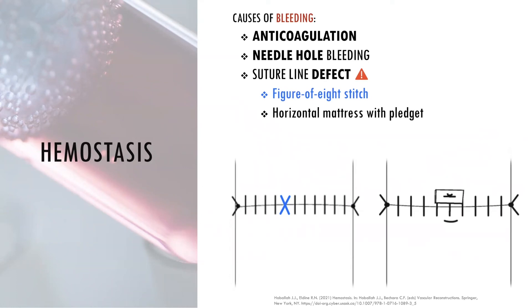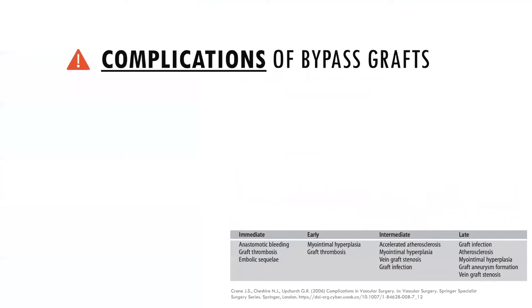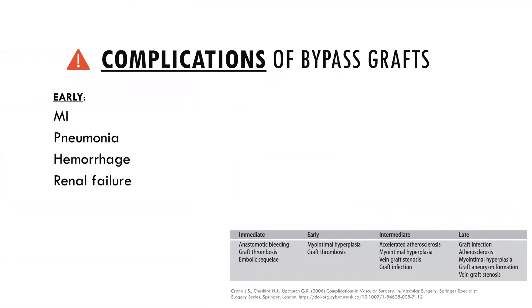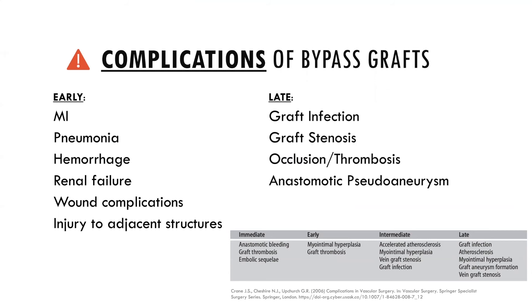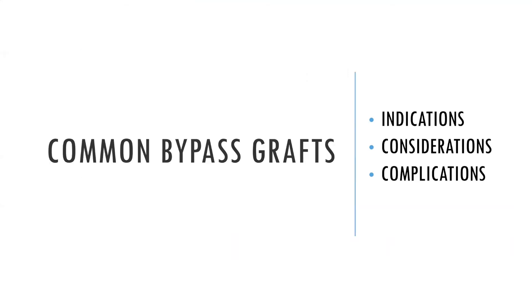Complications may occur in the perioperative and postoperative period. Early complications include cardiac complications such as MI, respiratory issues like pneumonia, hemorrhage, renal failure, wound complications, and injury to adjacent structures. Later complications include graft infection, graft stenosis or occlusion, and pseudoaneurysm formation at the anastomosis. Next we'll discuss the indications for common bypass grafts, unique considerations, and complications for each.